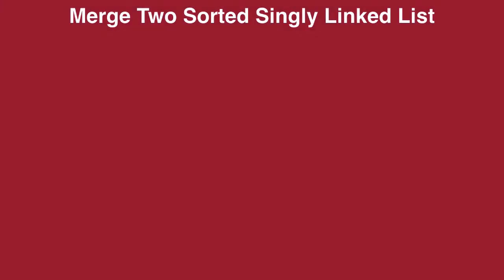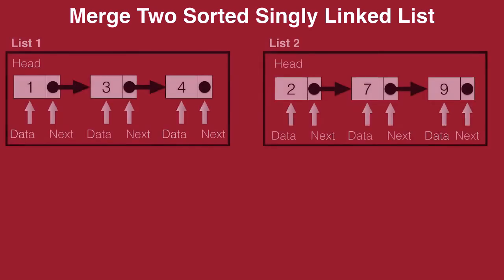In this lecture, you will learn how to merge two sorted singly linked lists. Let's take an example of two linked lists which are in sorted order. We have list 1 with three nodes 1, 3 and 4. List 2 with three more nodes with 2, 7 and 9. Now both of these lists are in sorted order.